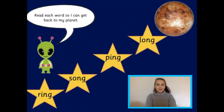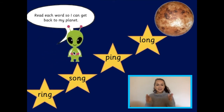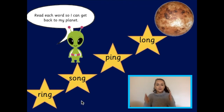The little alien has asked for some help — can we read each word on the star to help him jump all the way back to his planet? Let's read the first one all together. Get your robot arms ready — R, I, NG: ring. Excellent, he can jump up to the next star! S, O, NG — don't forget two robot arms when we see that digraph. Try it again: S, O, NG — song.